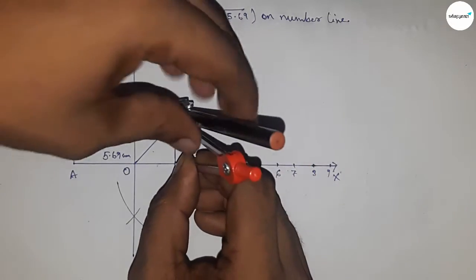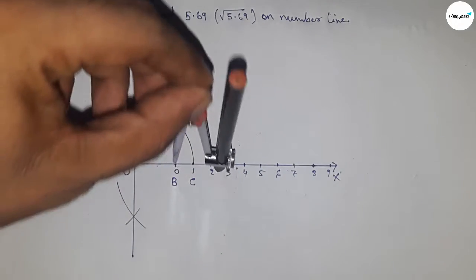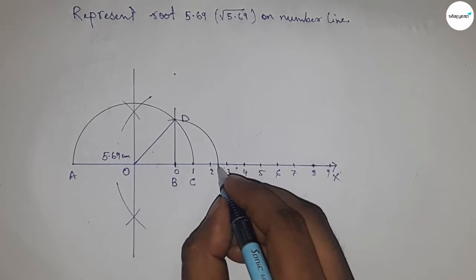Now joining O and D. Now taking the length BD by compass to draw an arc which meet the number line at a point P.